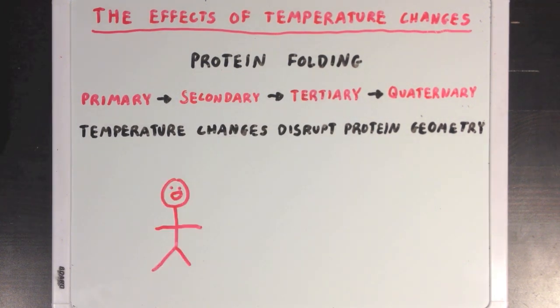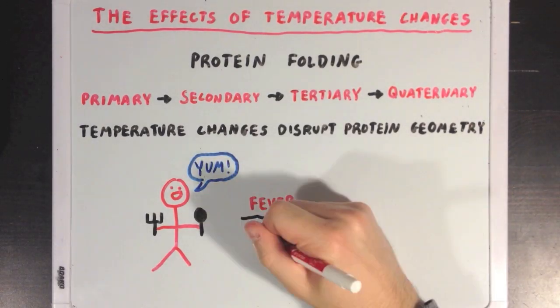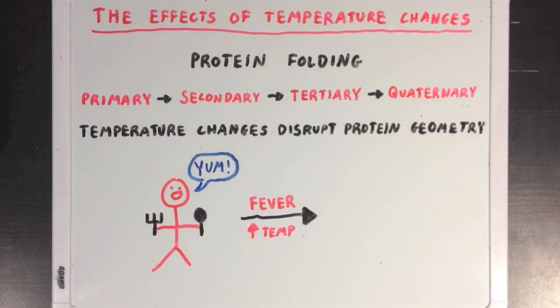If we have our same person from before who's really hungry and wants to eat, but now this person gets sick with a fever, his temperature will rise and a bunch of the digestive enzymes in his body will get all jumbled up and won't be properly folded anymore. This is why you might have a hard time eating and digesting food when you have a fever.